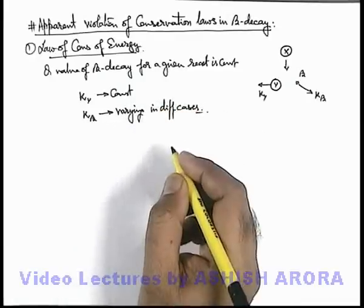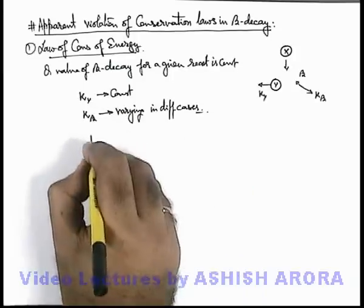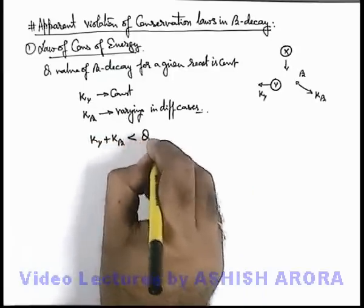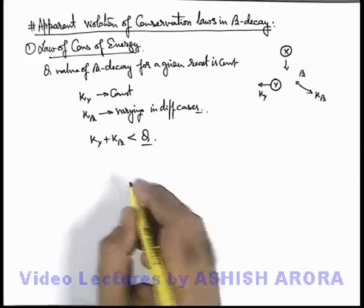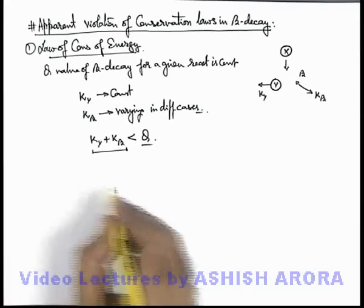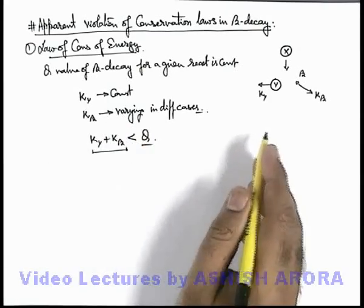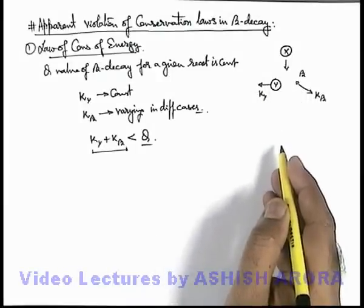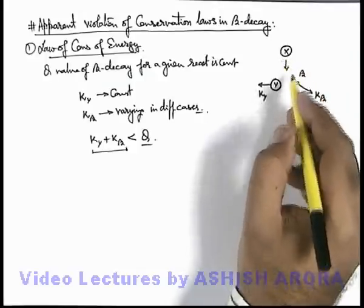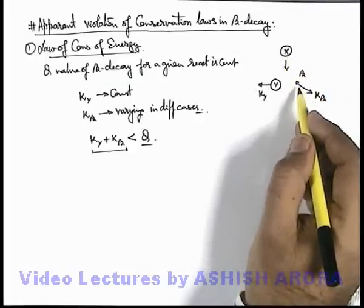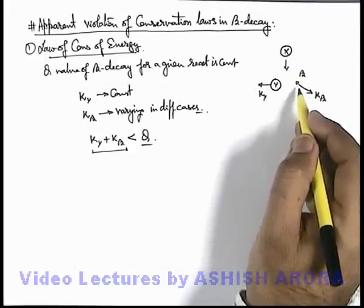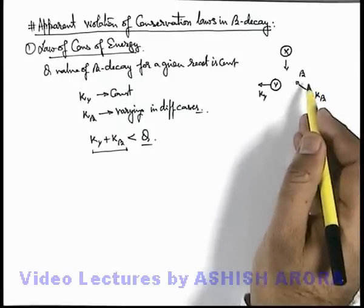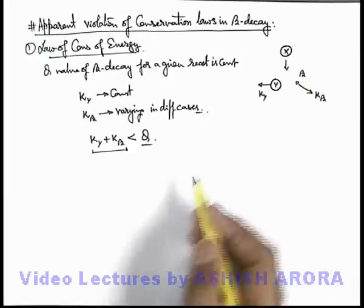So this was a mystery here, and it was also considered that K_Y plus K_beta when calculated was less than the Q value of reaction, and even this is not a constant. So this was a confusion that why the energy conservation law is not holding true, because whatever amount of energy is released must be shared between the two particles as kinetic energy. So it was assumed that some other particle or radiation should also be there in this emission, but practically it was not discovered.